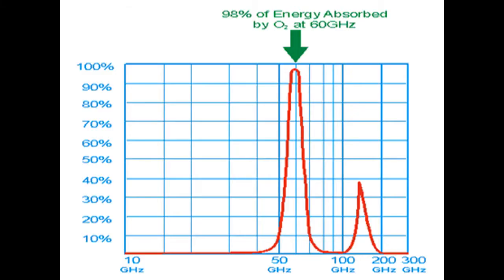Radio frequencies in a narrow band around 60 gigahertz — not up to 60 gigahertz — are attenuated by oxygen because that happens to be the resonant frequency of oxygen molecules.